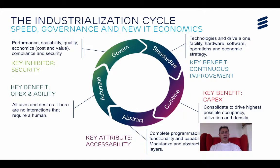And then once we have this massive compute, network, and storage, we can start to govern it. We can start to govern it from those six aspects of performance, scalability, quality, economics, compliance, and security.